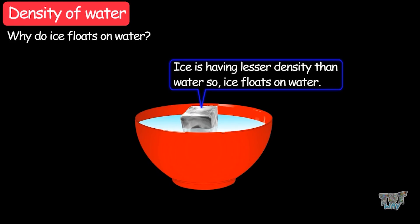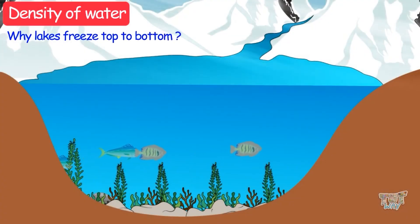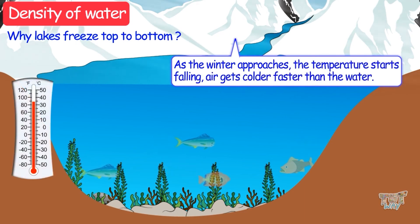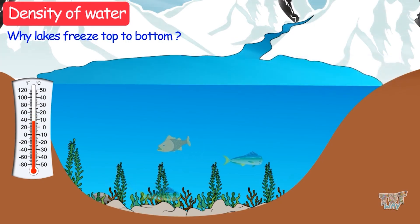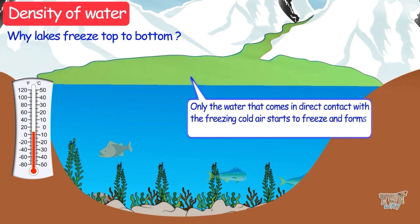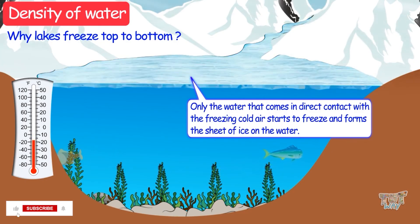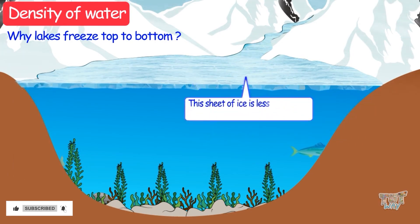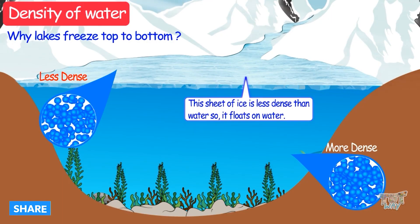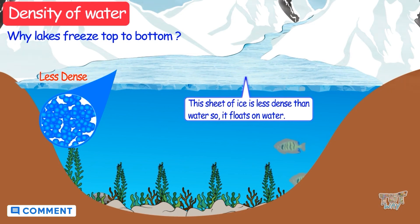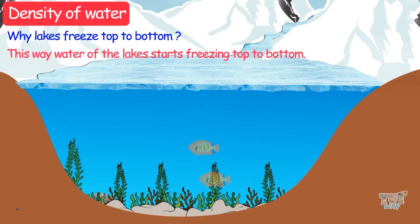Now let's learn another interesting topic: why do lakes freeze from top to bottom? As winter approaches, the temperature starts to fall. Air gets colder faster than the water, so air becomes freezing cold whereas water is not that cold yet. The only water that comes in direct contact with the freezing cold air starts to freeze and forms sheets of ice on the water. This sheet of ice is less dense than water, so it floats on the water, and its thickness may continue to increase if the temperature remains cold. This way, water at the lake starts freezing top to bottom.